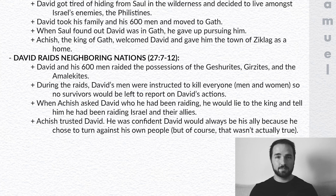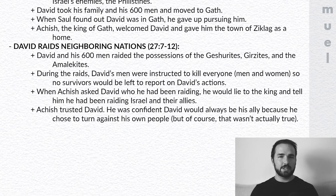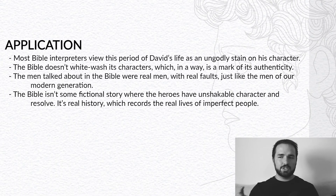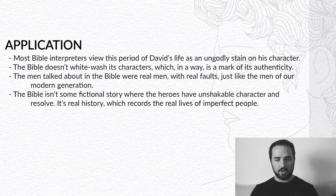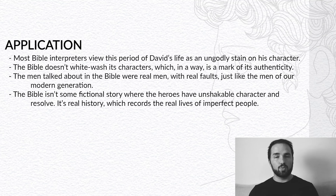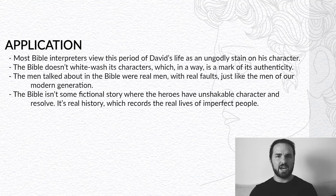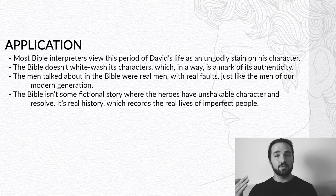Achish and the Philistines were kind of all David had left. And so that is 1 Samuel chapter 27 — an interesting chapter. David ends up in enemy territory and then begins these raids. You'll notice that there's no actual instruction from God that he should be involved in these raids, and that takes us into our application section. Most Bible commentators and interpreters — and I would agree with them — understand this period of David's life as a sinful stain on his otherwise godly character, something he should not have been involved in. That tells us something about the Bible: it doesn't whitewash its characters, which is a mark of its authenticity and genuine history. The men talked about in the Bible were real men with real faults. The Bible isn't some fictional story where all the heroes have unshakable resolve and unblemished character — these are real people, and it records the real lives of imperfect men and women.